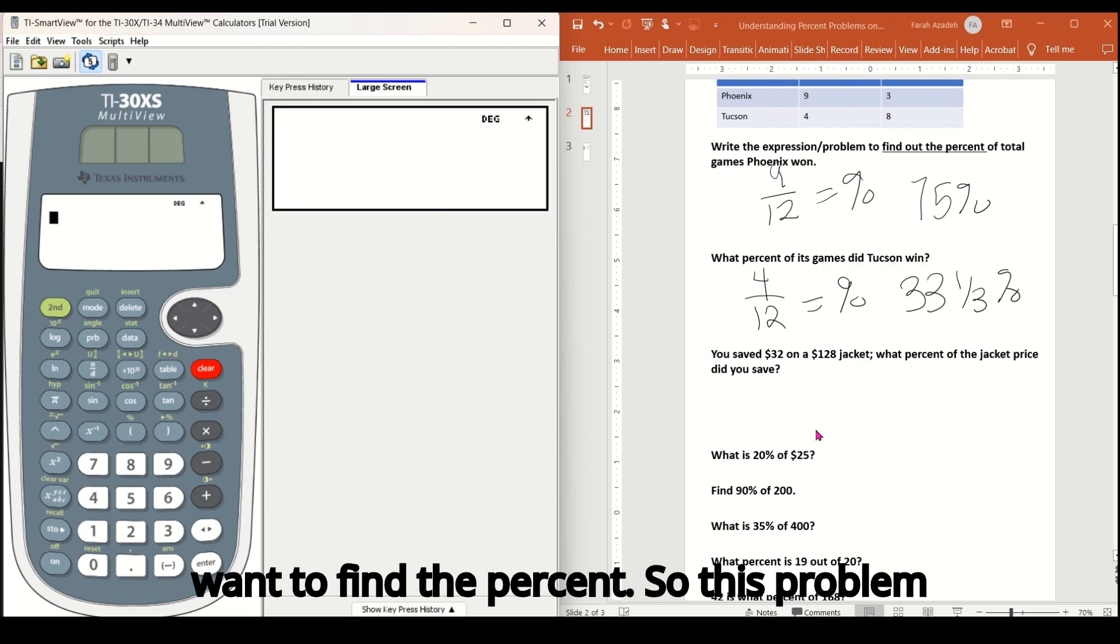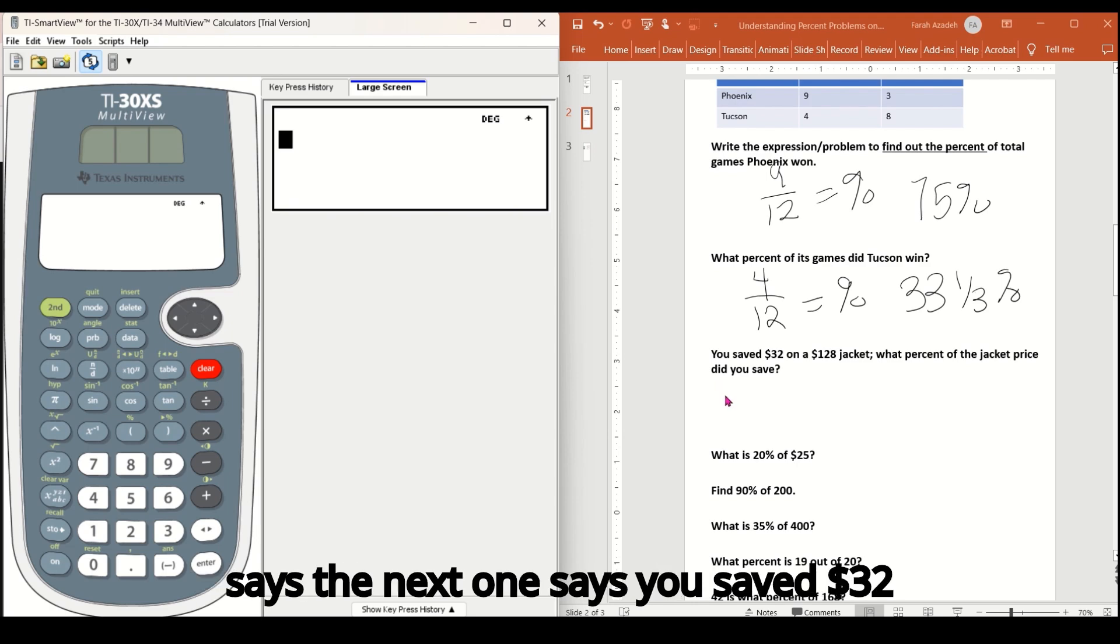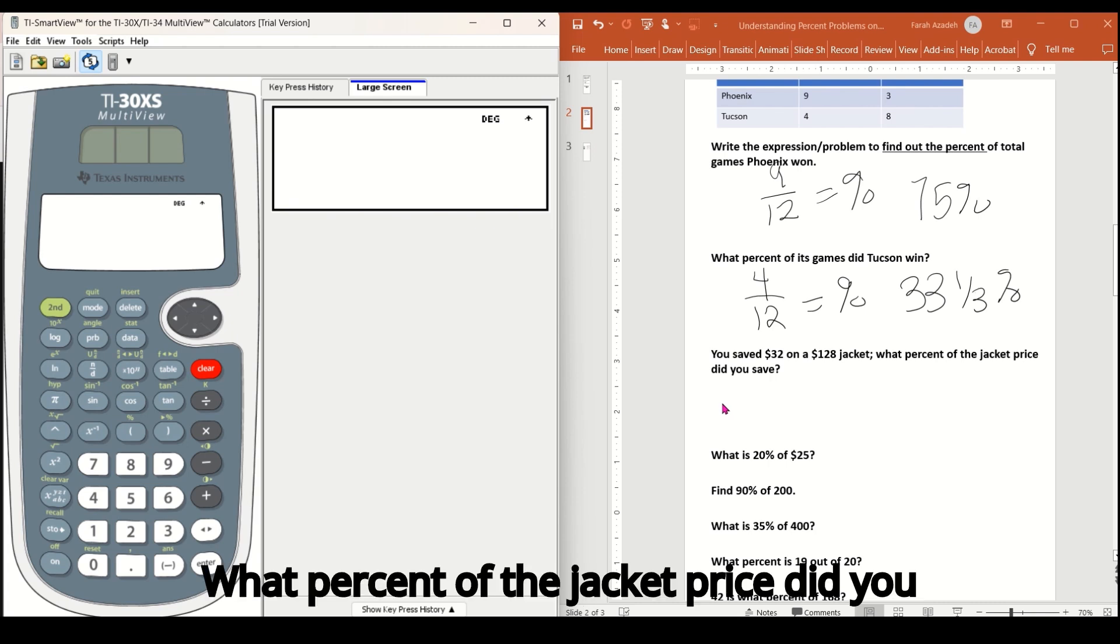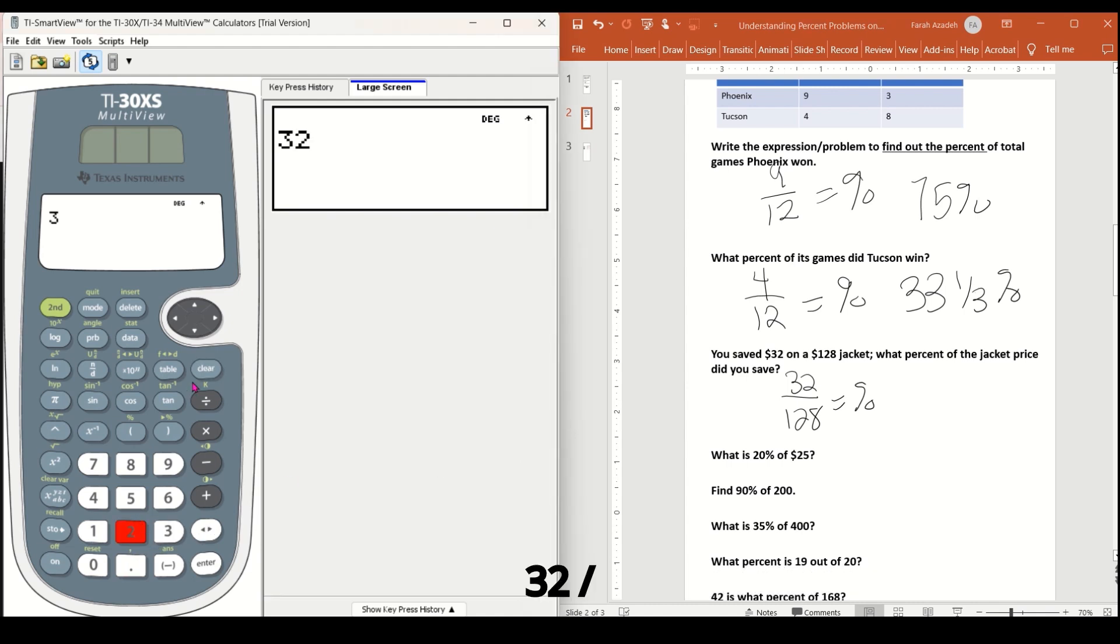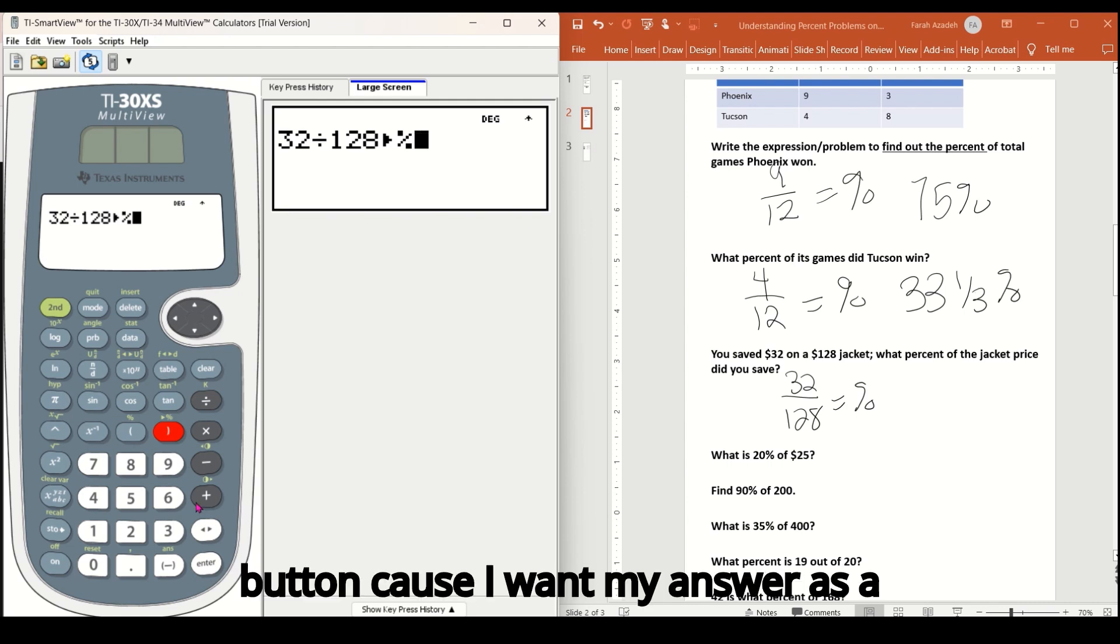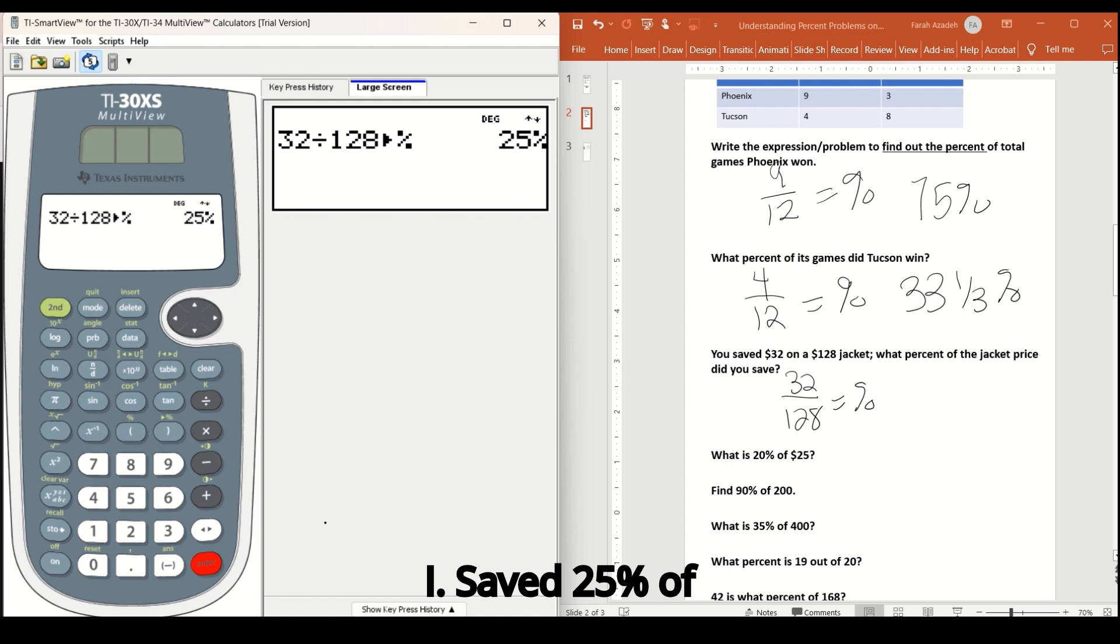So let's go ahead and clear this problem and go on to another one where we're using the same thing where we want to find the percent. So this problem says, you saved $32 on $128 jacket. What percent of the jacket price did you save? Okay. So I know that the part is 32, the whole is 128, and it'll give me my percent. But what percent of that total price? Let's go to our calculator. 32 divided by 128 second, close parentheses button. Cause I want my answer as a percent 25.